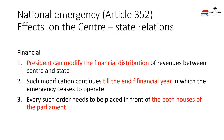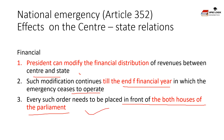Regarding financial effects on center-state relations: while a proclamation of national emergency is in operation, the President can modify the constitutional distribution of revenues between center and states. This means the President can reduce or cancel the transfer of finances from center to states. Such modification continues till the end of the financial year in which the emergency ceases to operate. Every such order must be placed before both houses of Parliament by the President.